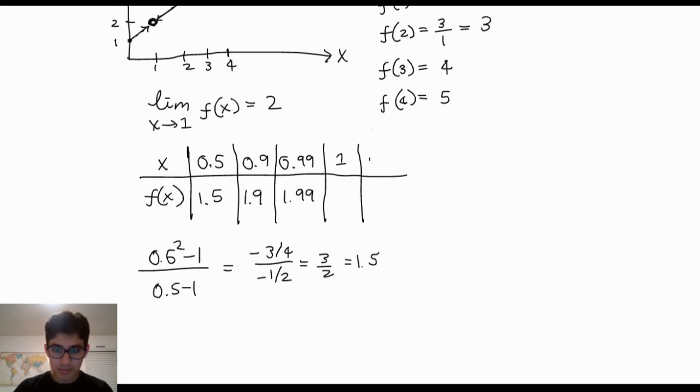Now, what about 1.01? This is going to end up becoming 2.01. And then similarly, 1.1 will become 2.1, and then 1.5 will become 2.5.